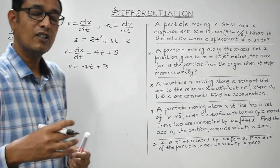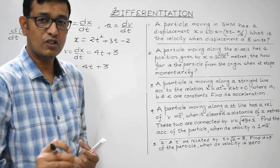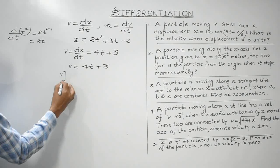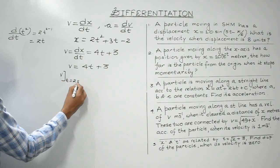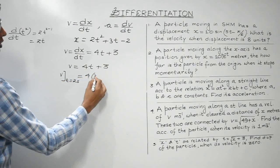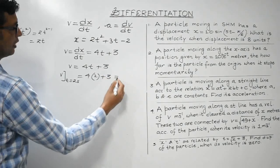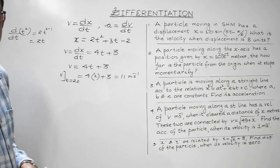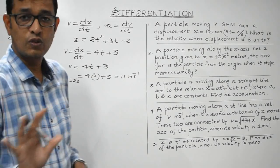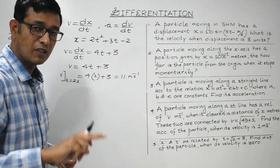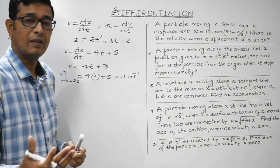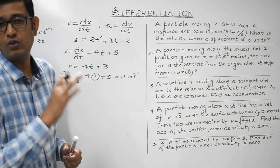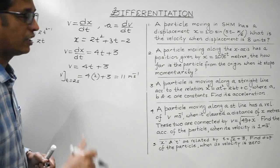If you are asked for the instantaneous velocity at t = 2 seconds, substitute into v = 4t + 3: velocity = 4×2 + 3 = 11 meters per second. So if displacement is given, the velocity of the body can be easily determined by differentiating displacement with respect to time. That is the application of differentiation.